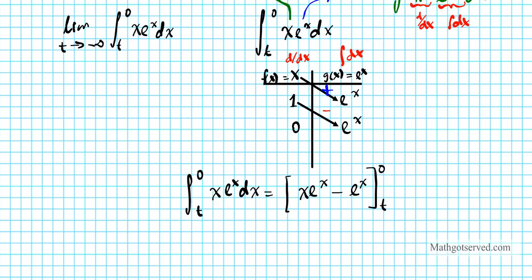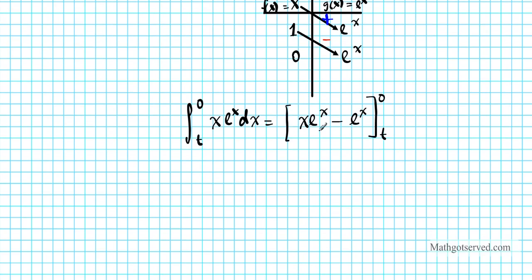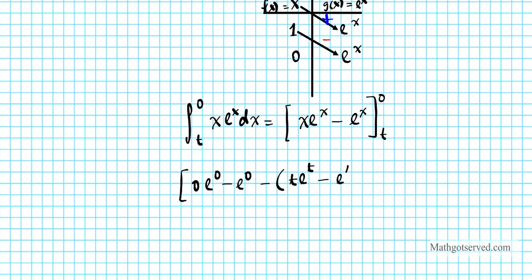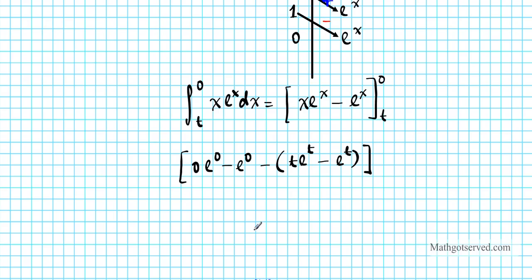Now we apply the Fundamental Theorem of Calculus part 2. Plugging in the upper limit first: 0 times e to the 0 minus e to the 0, minus the quantity t e to the t minus e to the t. We still need to take the limit as t approaches negative infinity, so let's not forget about that.